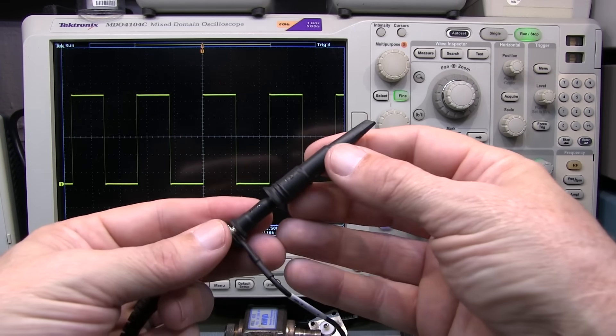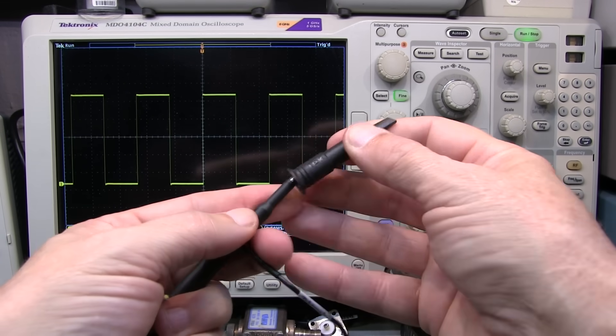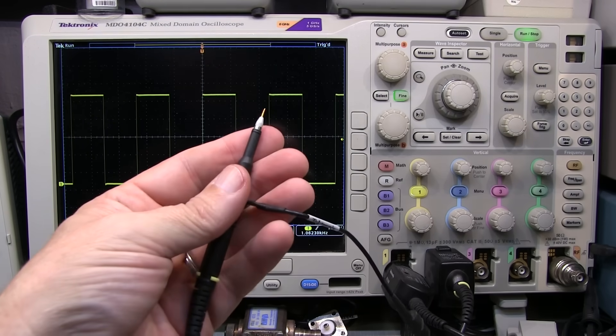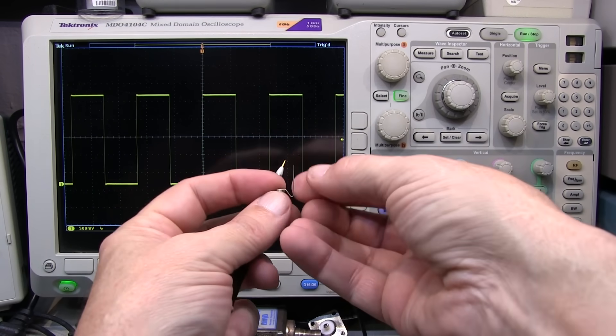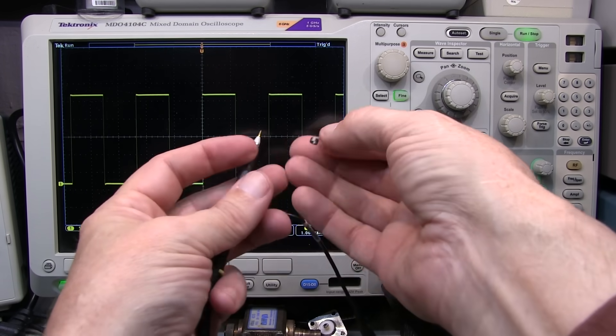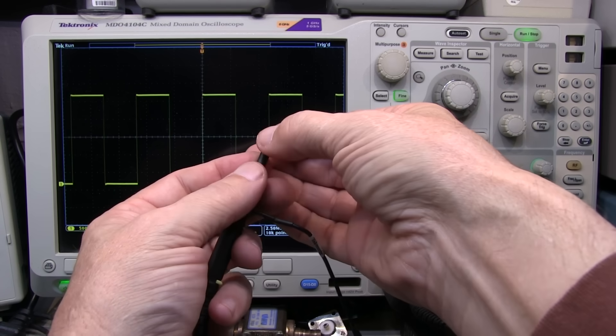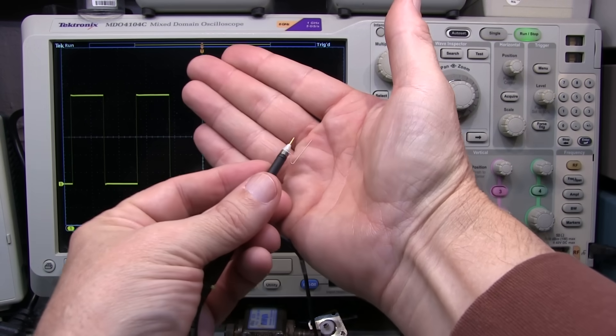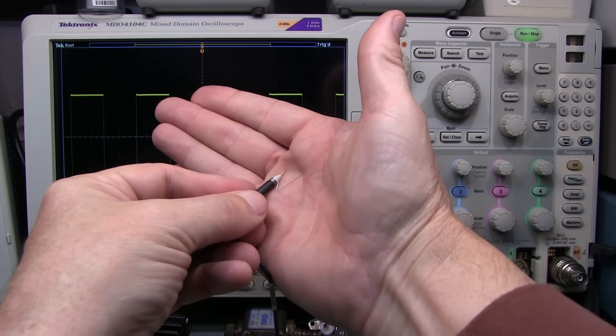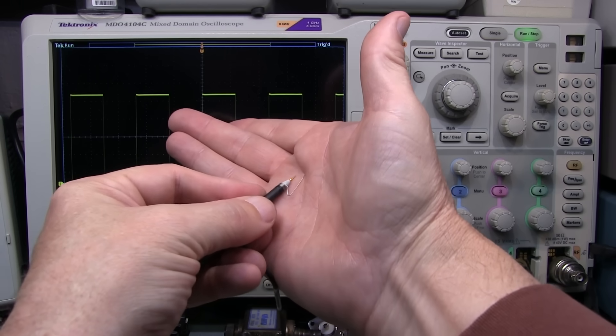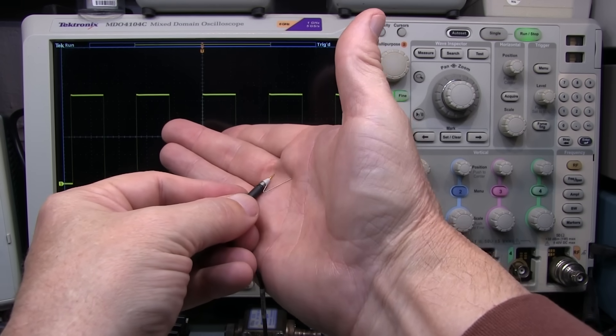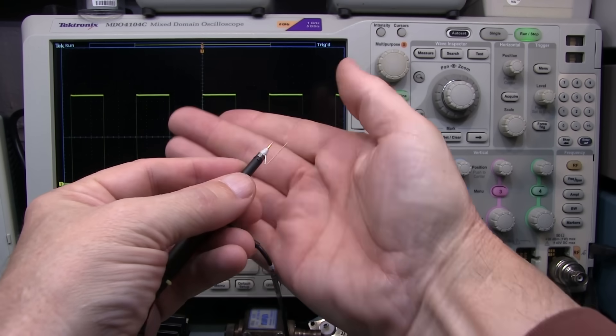Another variation is this particular probe here, where you simply unsnap the witch's hat. And then one of the included accessories is this little ground spring that would slip right over the probe tip and give you a nice spring-loaded ground pin that can connect up to the ground of your circuit and give you some flexibility in moving around the probe tip to a particular area.